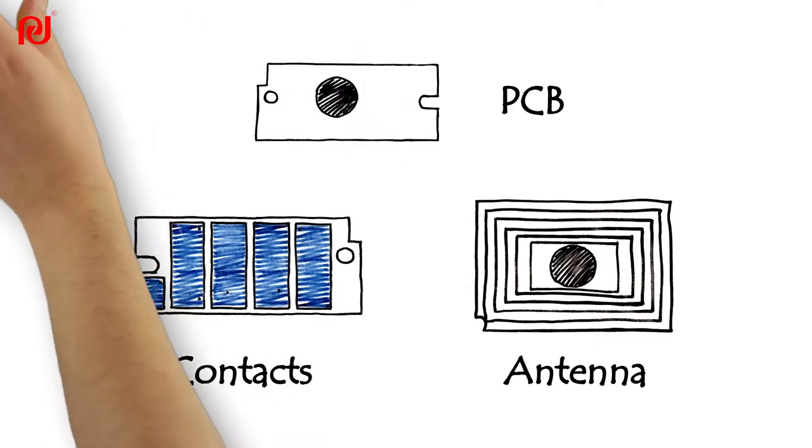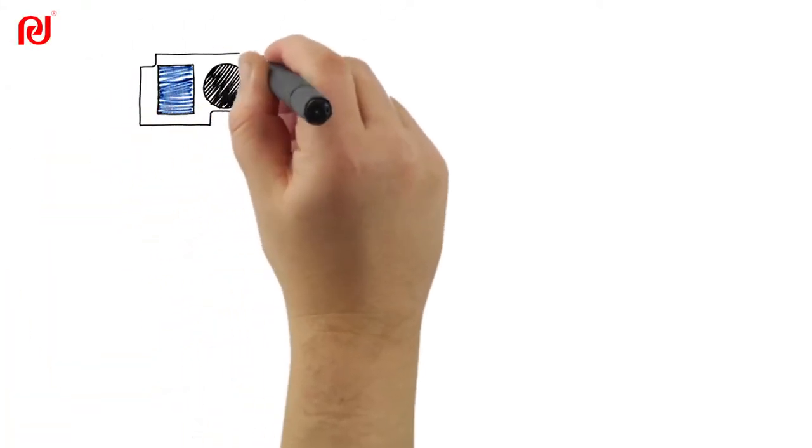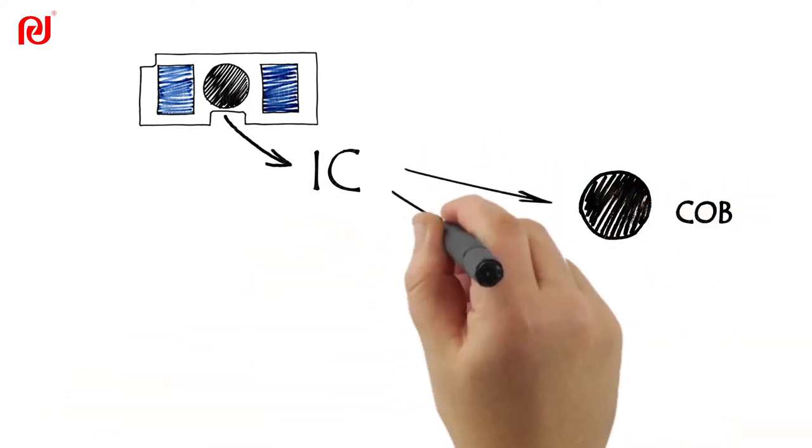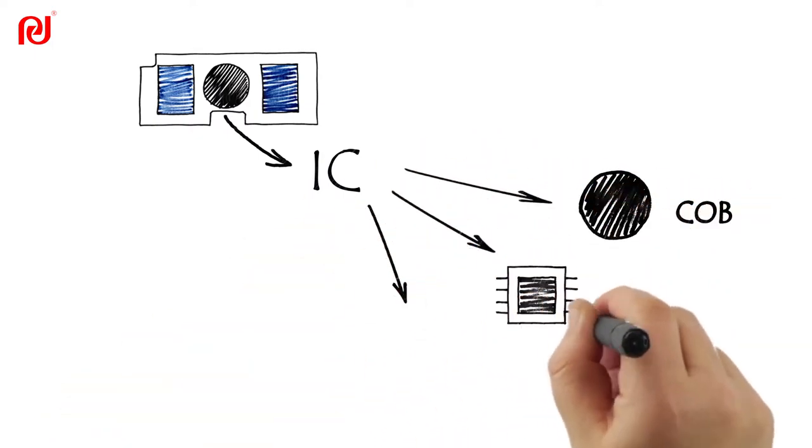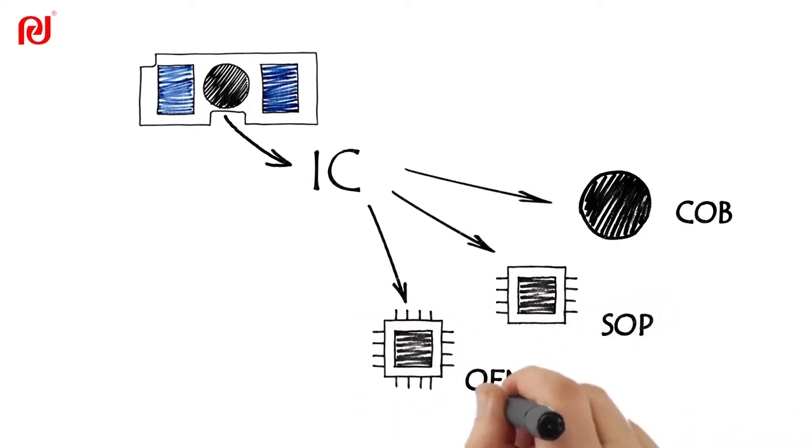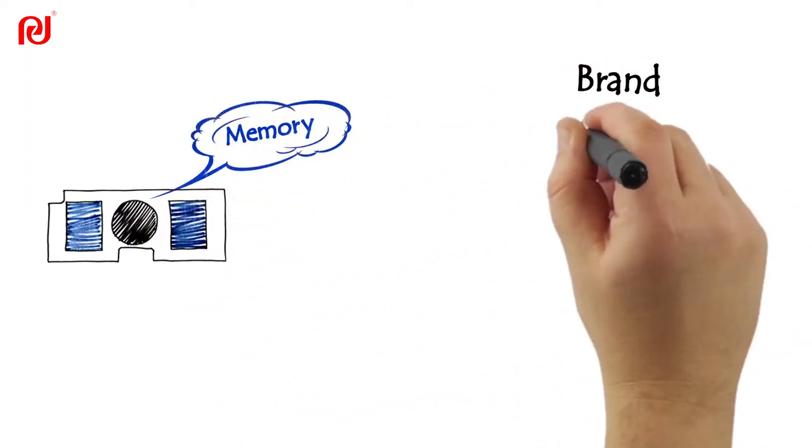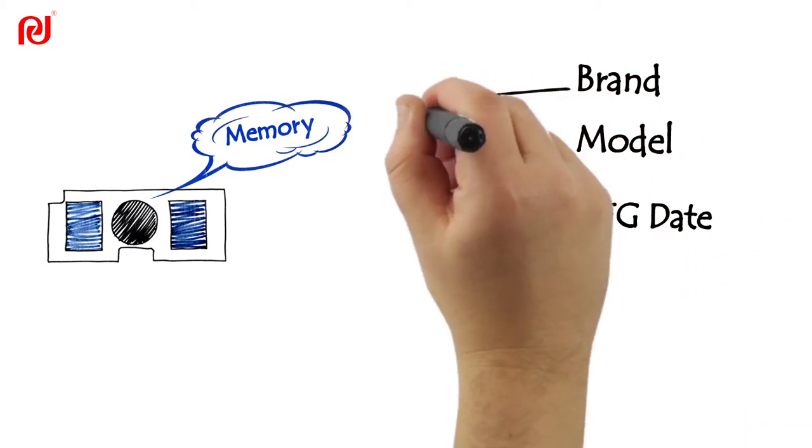Consumables chip always embeds an IC on the PCB. IC's outlook may be soft package as COB or hard package like SOP or QFN. Inside IC there is a non-volatile memory storing brand, model number, manufacturer date, etc. for printing consumable, which called fixed data.